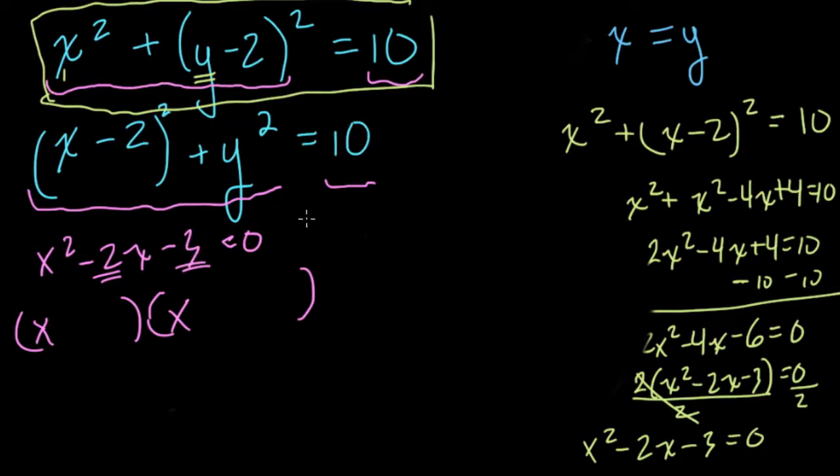And if I add -3 and 1, so -3 times 1 equals -3, and -3 plus 1 equals -2. So I need the factors -3 and 1. (x + 1)(x - 3) equals 0.